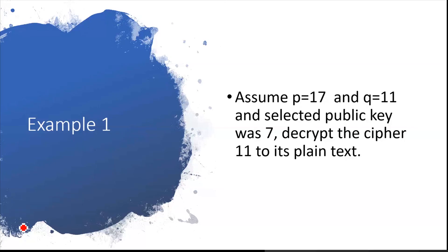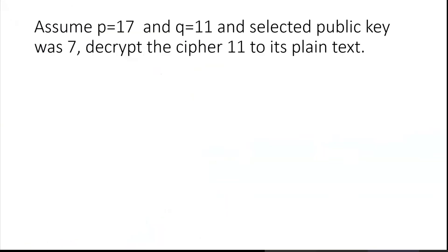Since the cipher was also on the network channel, Eve also has the cipher. Finally, Bob decrypts the cipher using the private key D. Now let us solve a numerical example. Assume P = 17, Q = 11, and the selected public key E = 7. Bob wants to decrypt the received cipher, which is 11. What will be the plain text?